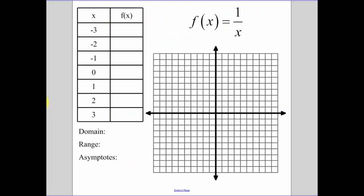Our parent function. And it's important that you guys know how to graph this. So let's get some values. When I plug in negative 3 into our function, we get negative 1 third. When I plug in negative 2, I get negative 1 half. When I plug in negative 1, we get negative 1.